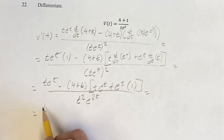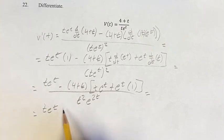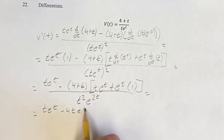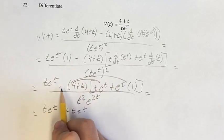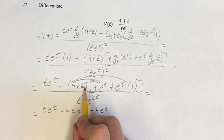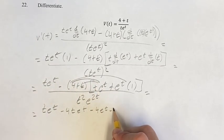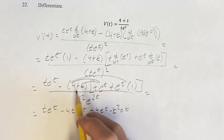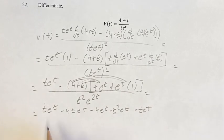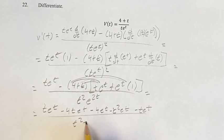Continuing to simplify this, we get t e to the t, minus 4 times t e to the t, minus 4 e to the t, minus t squared e to the t, minus t e to the t, over t squared e to the 2t.